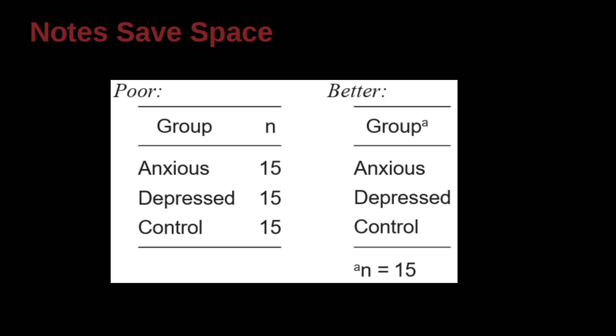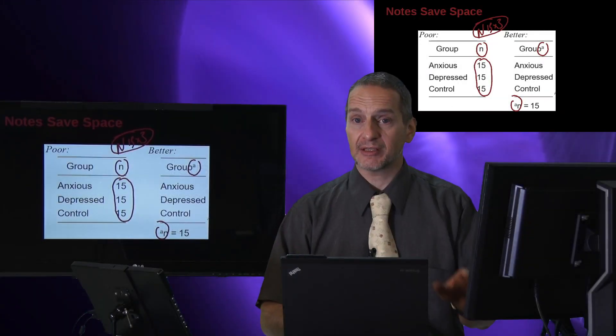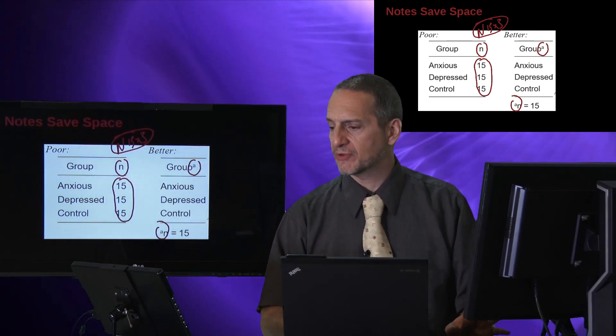So how can you use notes to save space? Here's an example. On the left side, we have this group, and then N, anxious, depressed, control, 15, 15, 15. And of course, this is interesting. We have the N, which means subgroup, right? So the total N is actually 15 times 3. That's the total group, the total sample size. We've broken them into three subgroups, so we use N. But they're the same. So why not make the table smaller? How? Just say group. What is a group? Make a note. In this case, A is N equals 15, 15 people inside the subgroup. It's a really great example of how to save space. A lot of space saves. Basically, you have a whole extra column cut off of the table.